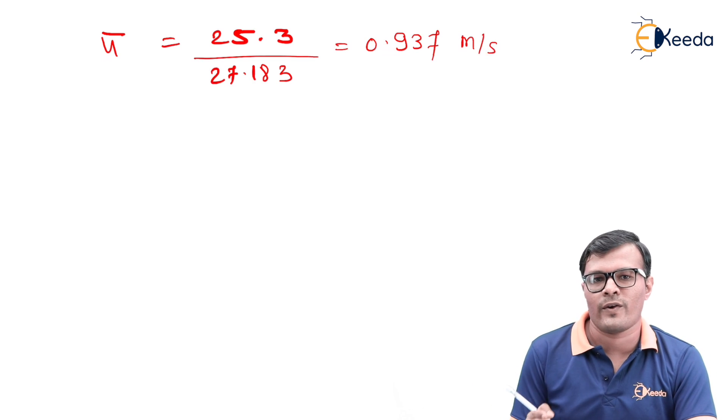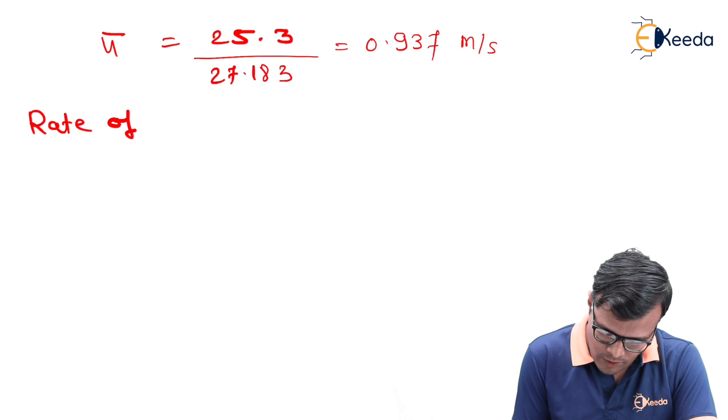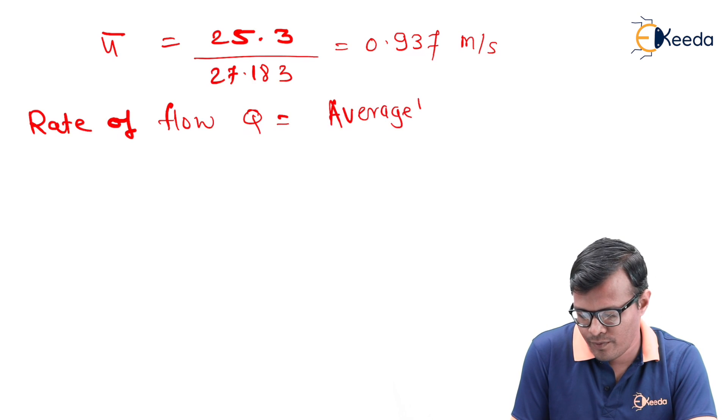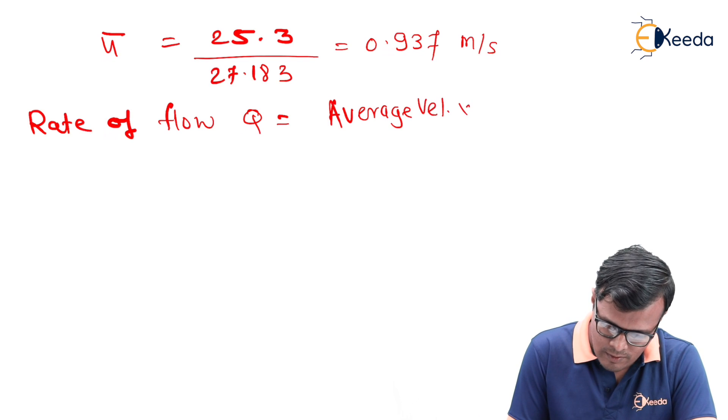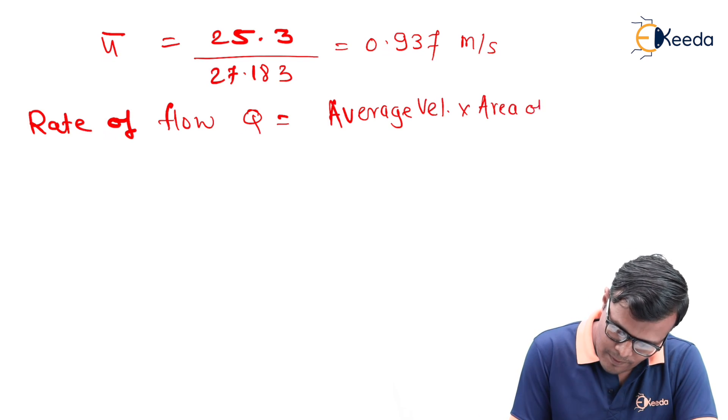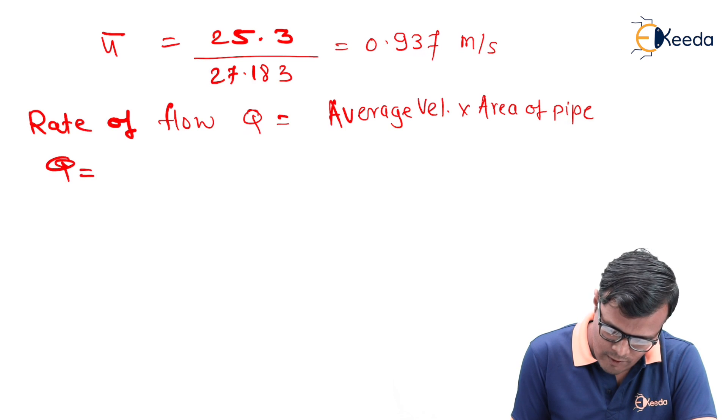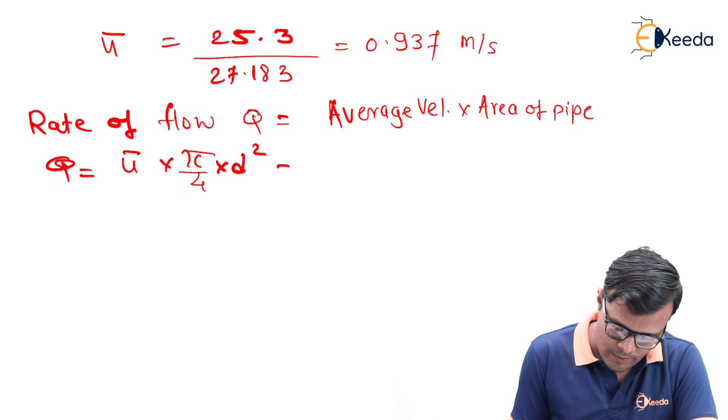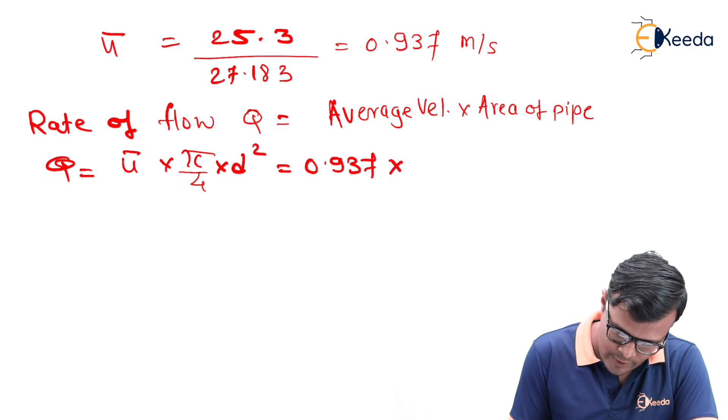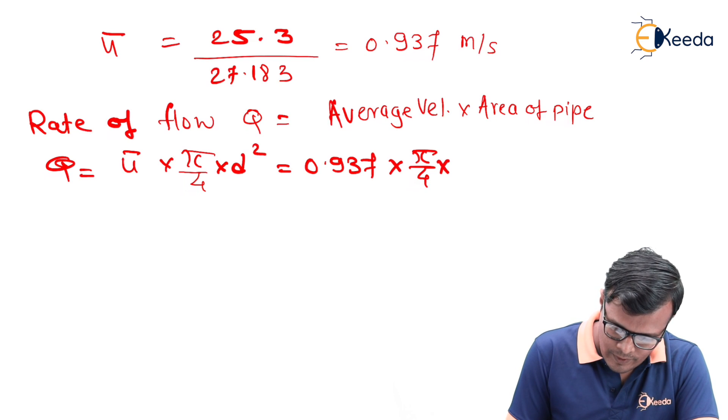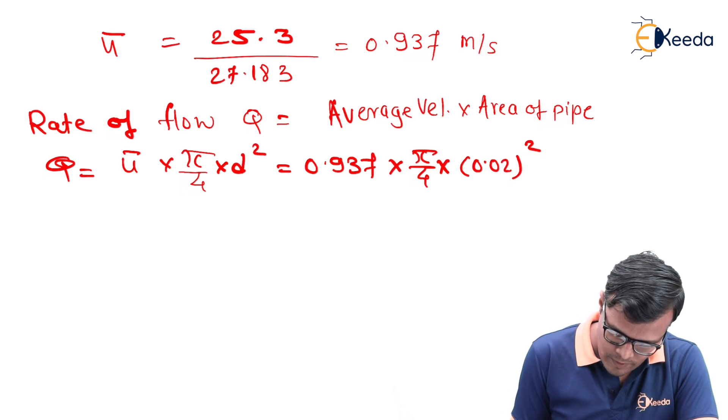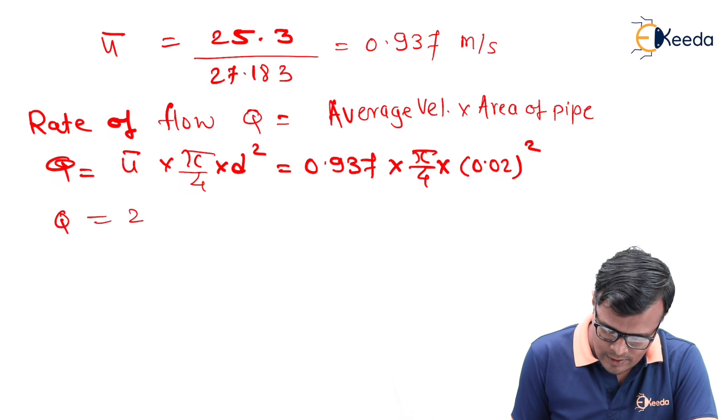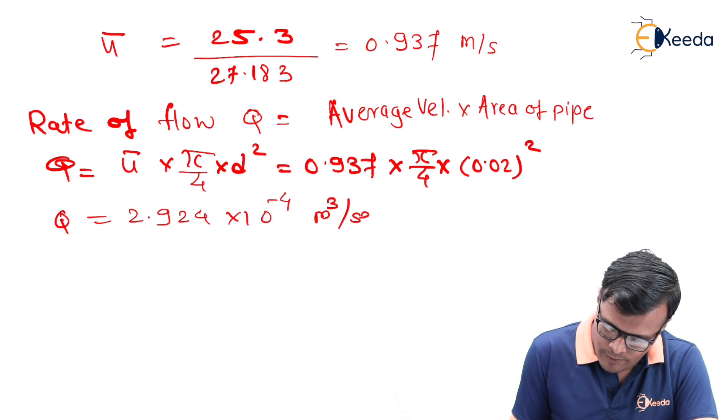Now the next task is to calculate rate of flow. Rate of flow Q equals average velocity multiplied by area of pipe. Q will be equal to u bar × π/4 × D square. U bar is 0.937 × π/4 × D square. We will have a value of Q as 2.924 × 10^-4 meter cube per second.